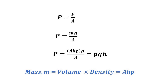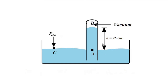The basic design of a mercury barometer is as follows: it consists of a container filled with mercury, and then an inverted glass tube which is placed into the container. The atmospheric pressure is exerted on the entire container filled with mercury.